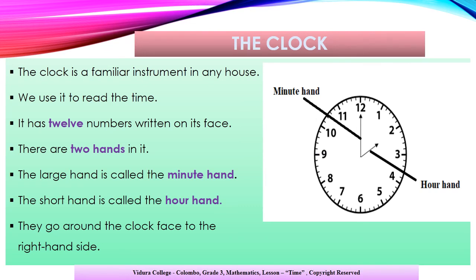Children, let's learn about the clock. The clock is a familiar instrument in any house. We all have a clock in our houses, and we use it to read the time. It has 12 numbers written on its face. There are two hands on it. The large hand is called the minute hand. The short hand is called the hour hand. They go around the clock face to the right-hand side.